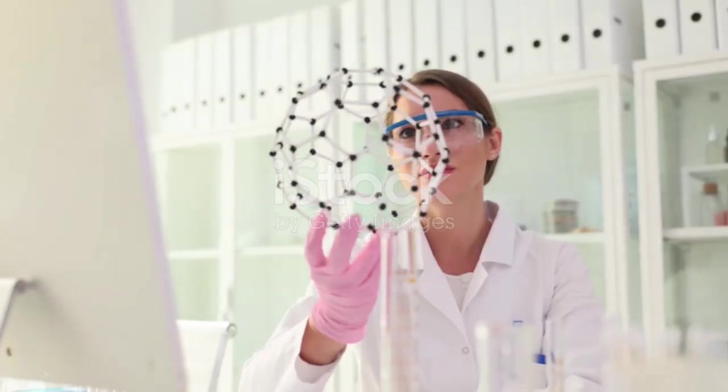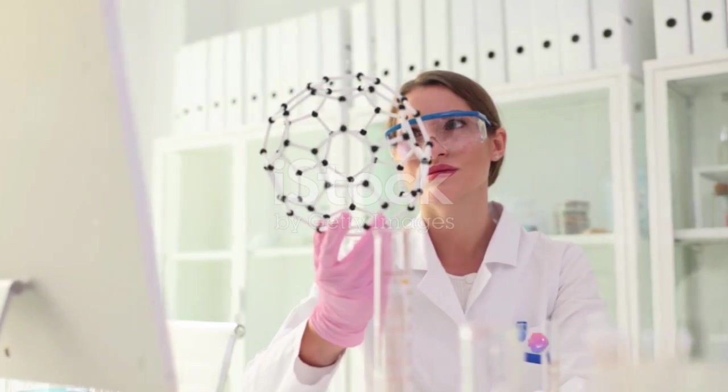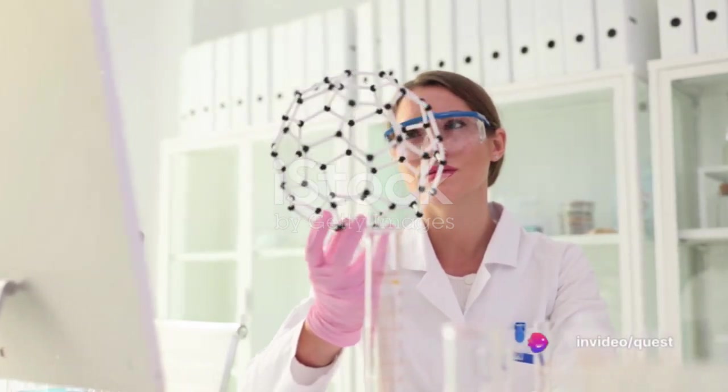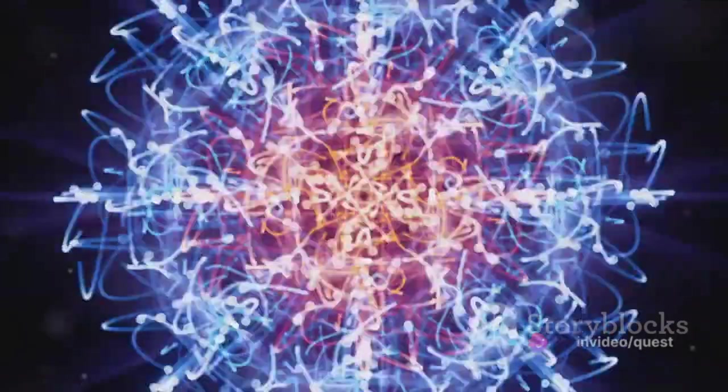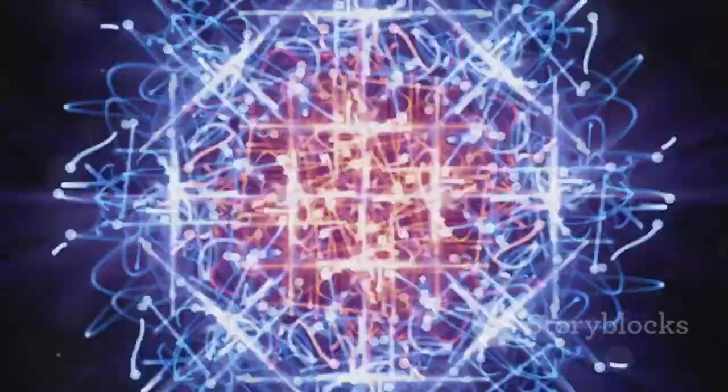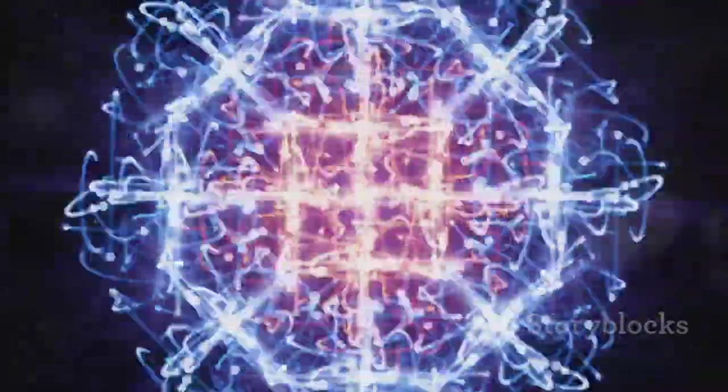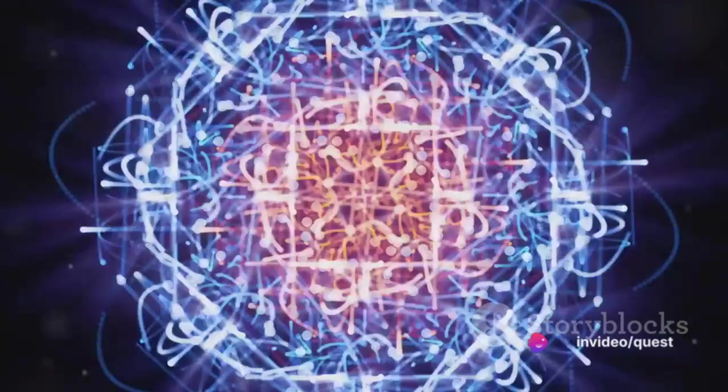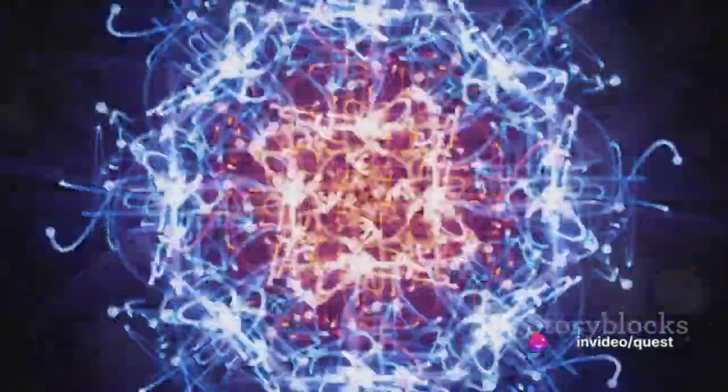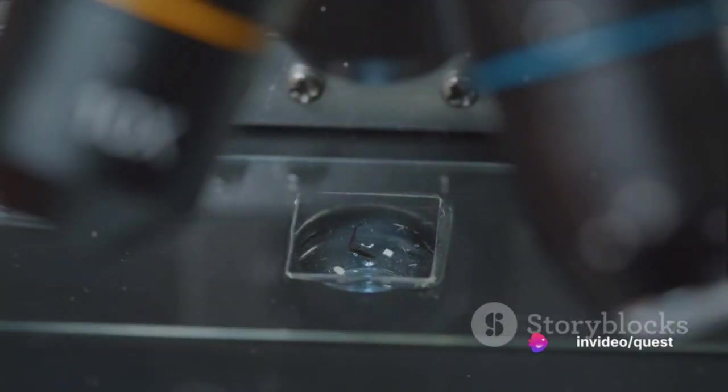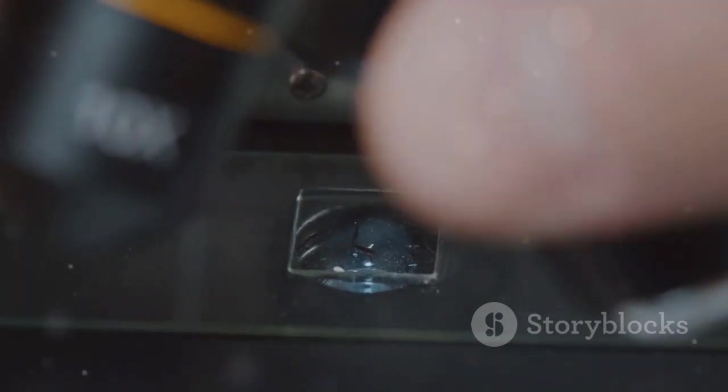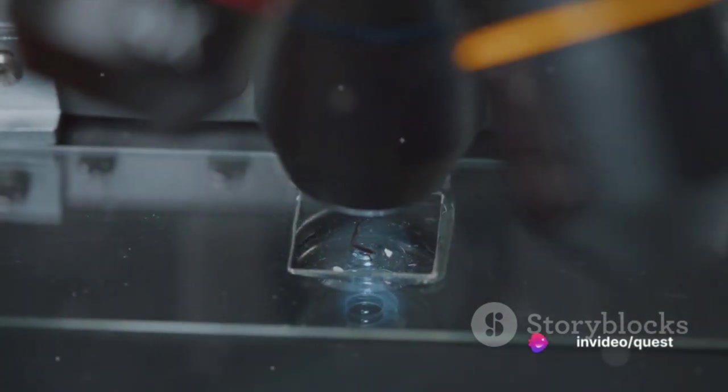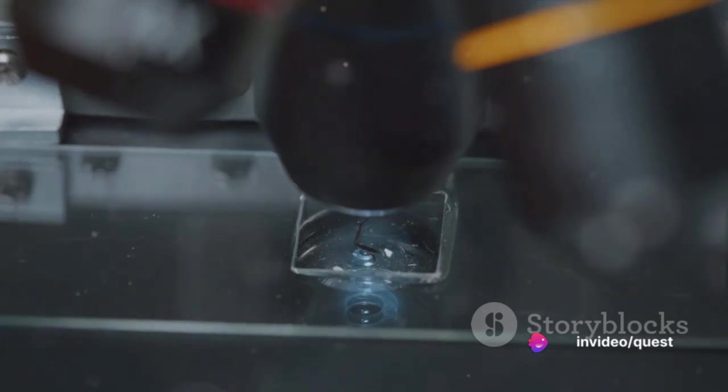Think of diffraction as a detective, unveiling the secrets that the atoms in a crystal are trying to hide. Each crystal has a unique atomic structure and thus a unique diffraction pattern. By studying these patterns, scientists can determine the number and arrangement of atoms, the lengths and types of chemical bonds, and even the angles between these bonds. The beauty of diffraction in crystallography is that it gives us insights that would otherwise remain hidden. It's like a key, unlocking the door to the microscopic world within crystals. A world that is as fascinating as it is complex.